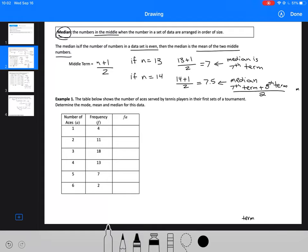Let's look at an example where we're going to calculate each of those three characteristics for a given data set. The table below shows the number of aces served by tennis players in their first sets of a tournament. Determine the mode, mean, and median for this data. Our first column is the number of aces, second column is the frequency, and then we need to know our total between those two columns.